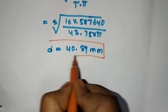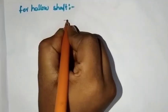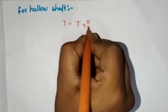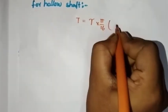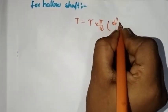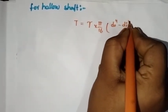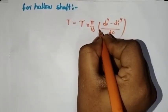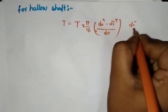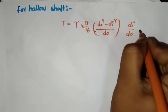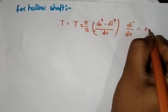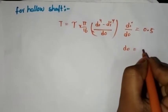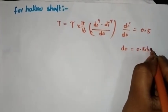Next, for hollow shaft: T is equal to tau into pi by 16, d o power 4 minus d i power 4, by d o. Given d i by d o is equal to 0.5, so d i is equal to 0.5 d o.